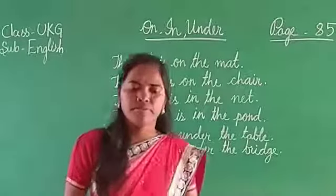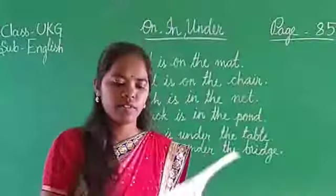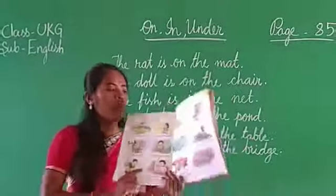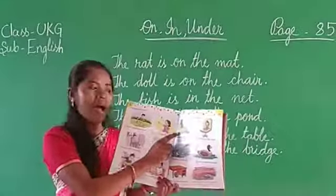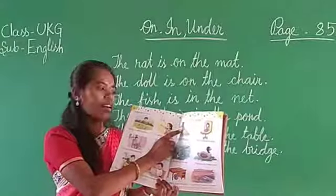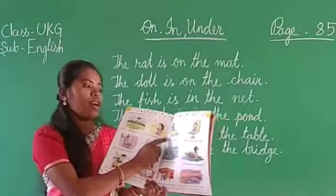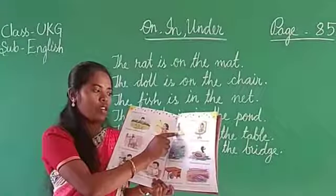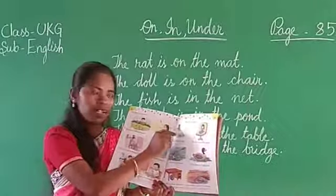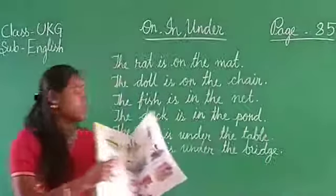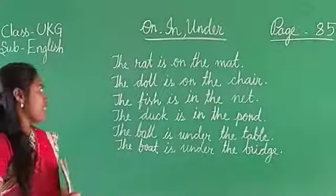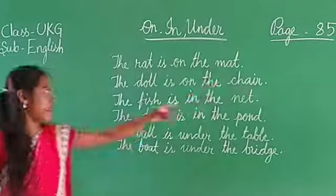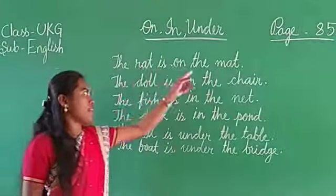Let's see the book, page 85. What do you see here? This is a mite, and what is this? A rite. The rite is sitting on the mite — not inside the mite, but it is sitting on the mite. So here it is used on. Let's read the sentence: the rite is on the mite. Please repeat: the rite is on the mite.